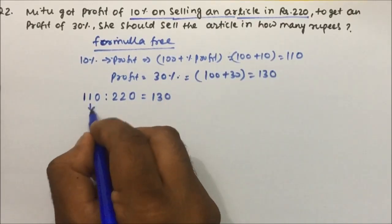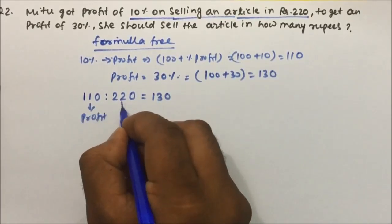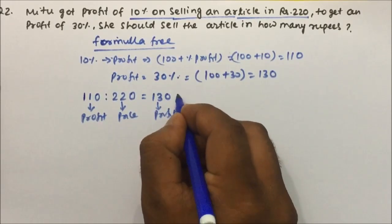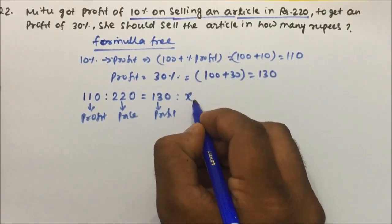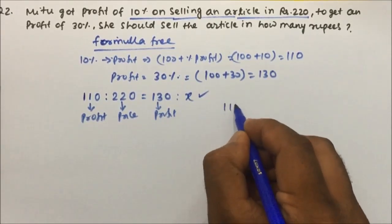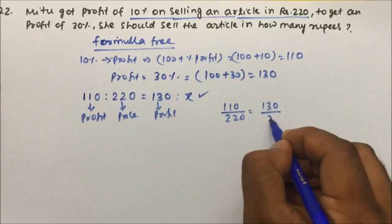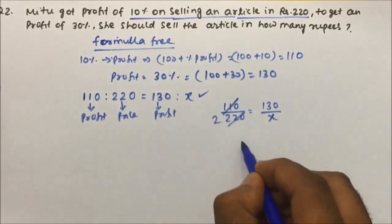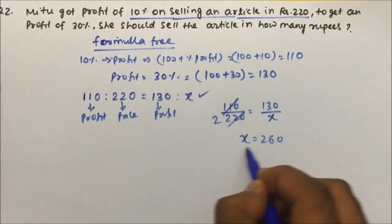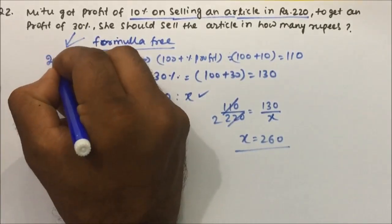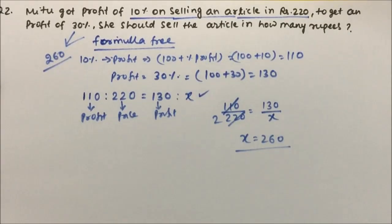On one side I am writing the profit and on the other side I am writing the price. So 110 divided by 220 equals 130 divided by x. This simplifies by 2 times, so x equals 260 rupees. Meaning, to get a profit of 30%, you have to sell the article at 260 rupees. Thanks for watching the video.